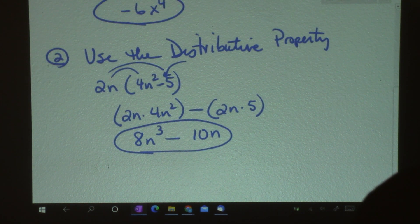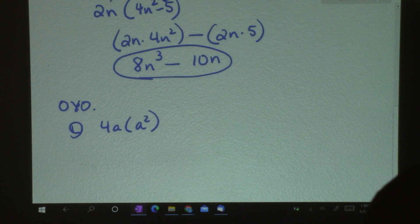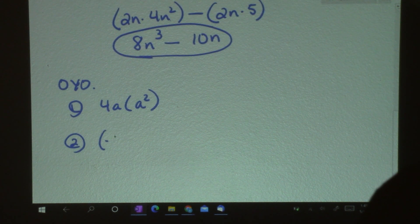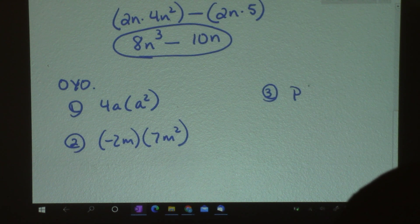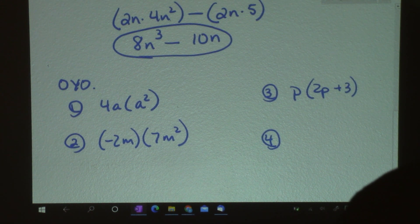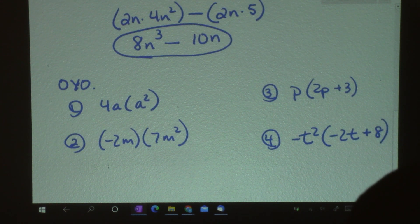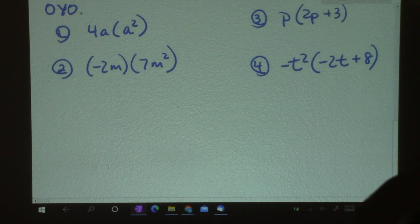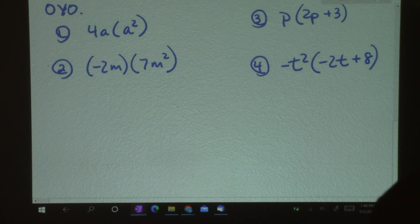That's multiplying two terms. Now, we're going to use the distributive property to do the next one. 2n times 4n squared minus 5. So I want to multiply 2n times both terms in the parentheses. So I'm going to rewrite that, showing that. 2n times 4n squared. And then I'm going to have a minus, because I have a minus there.